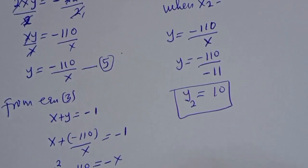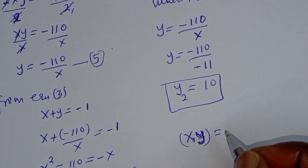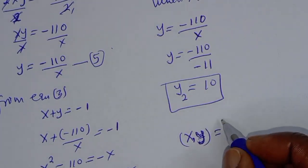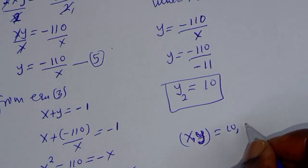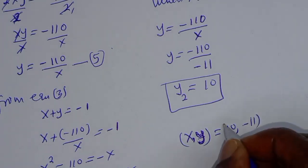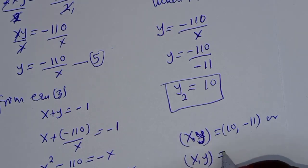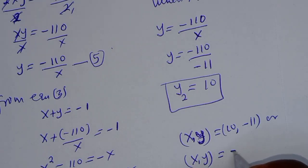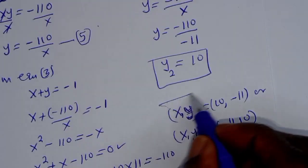Therefore our final answers are: (x, y) equals (10, minus 11), or (x, y) equals (minus 11, 10). This is the final answer.